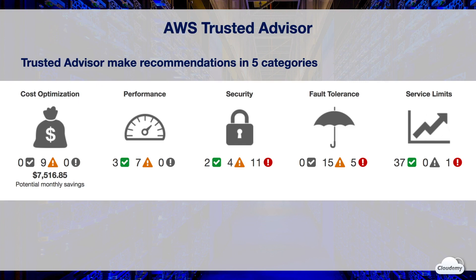Security recommendations help you identify security settings that can make your AWS resources more secure. Fault tolerance recommendations help increase the resiliency of AWS resources by highlighting redundancy shortfalls, current service limits, and overutilized resources. Service limits tells you when service usage is more than 80 percent of the service limit in your AWS account so that you can extend the limit in advance.